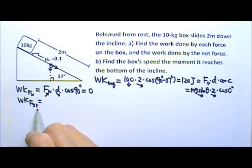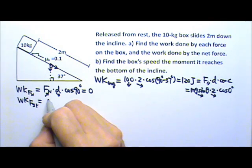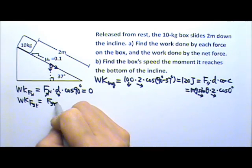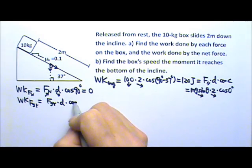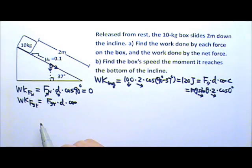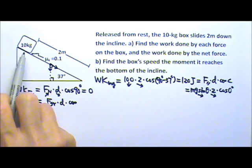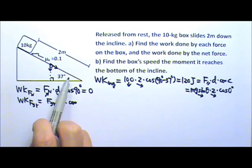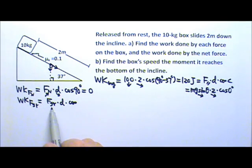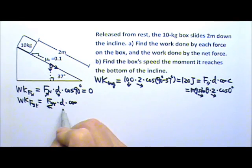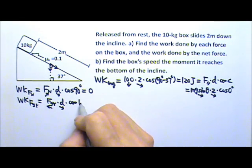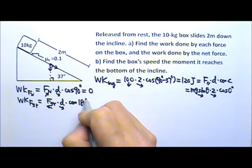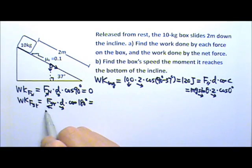The work done by friction equals friction times the displacement times cosine of the angle between the two. The box slides down the incline, so friction acts against the sliding motion — it goes up the incline while the displacement goes down. So we have cosine 180 degrees. Now we have to find the magnitude of the friction force.